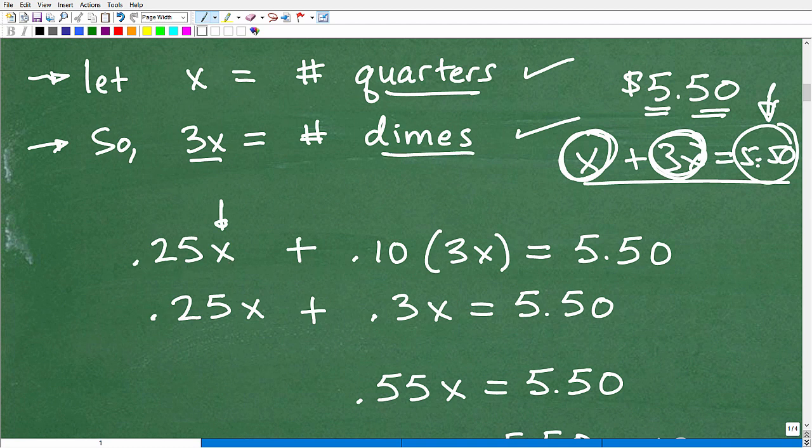Here we go. 0.25X, this is our quarter value, plus the value for a dime is 10 cents, 0.10 of a dollar because we have $5.50. X is the number of quarters we have and 3X is the number of dimes. So it's going to be 0.25X plus 0.10 times the number of dimes we have, which is 3X. And that is going to be equal to $5.50. We don't have to write the dollar sign because we're setting up an equation.